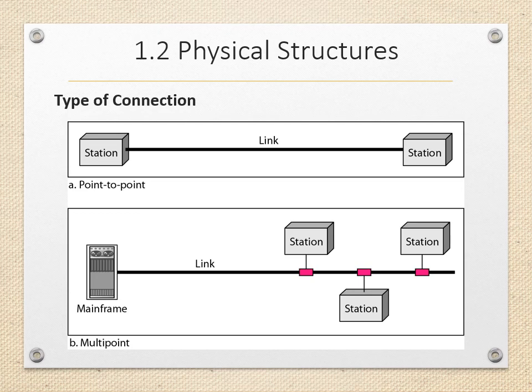We move on to the physical structure of networks. We will see different types of connections: point-to-point connection and multipoint connection. Point-to-point connection provides a dedicated link between two devices, meaning the link is meant only for those two devices.